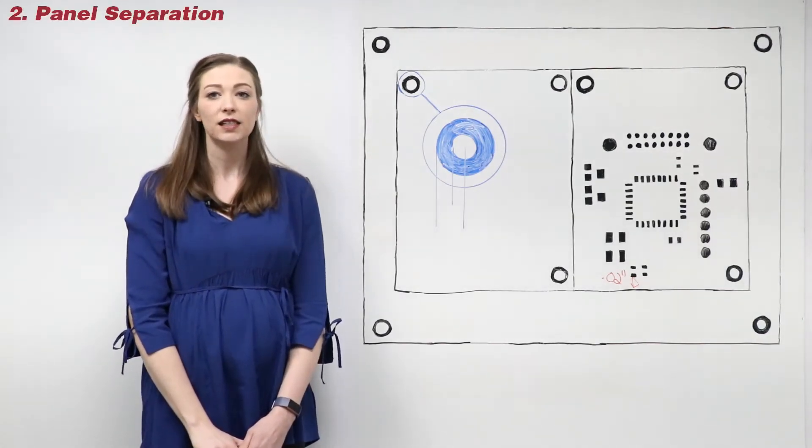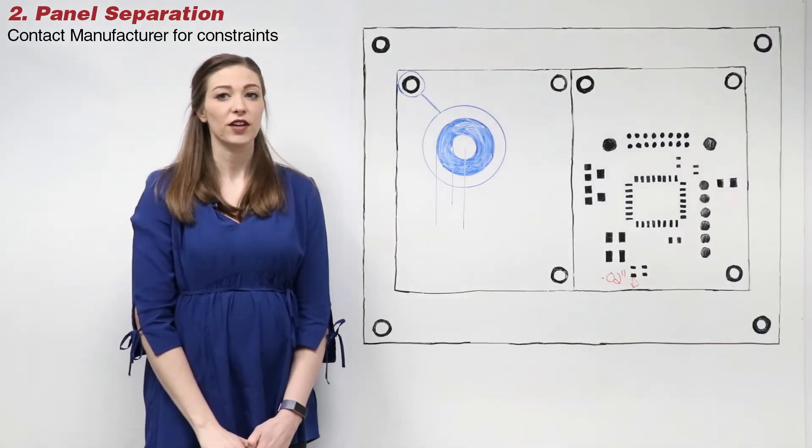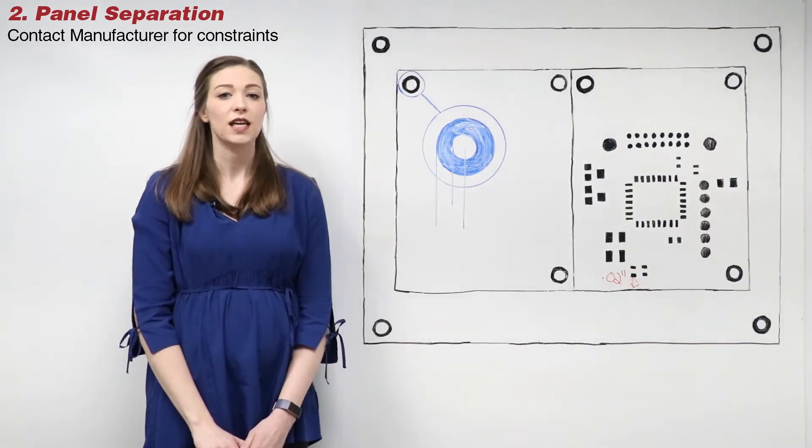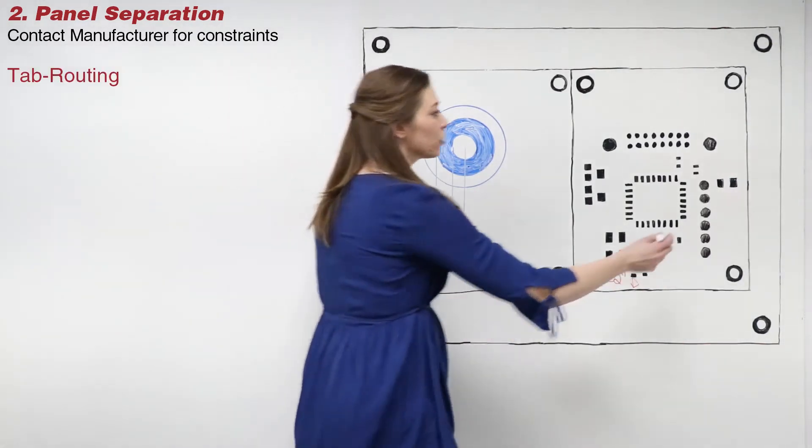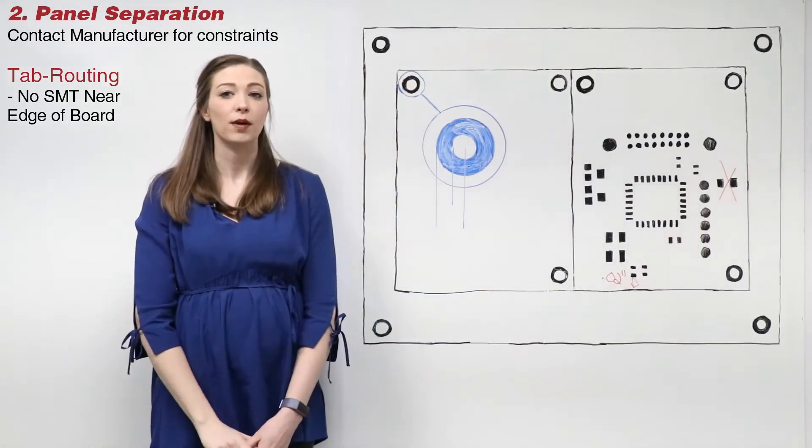Second, consider the process of separating the panels. Be sure to contact your manufacturer for their specific constraints. For example, if your manufacturer is using a tab routing process, don't place surface mount components near the edge of the board due to the aggressive nature of the tab cutter.